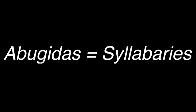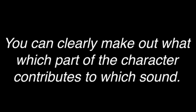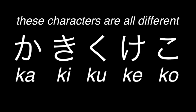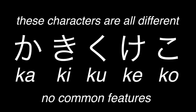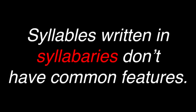So why is classifying abugidas and syllabaries as the same thing wrong? Take the Hindi characters 'ka', 'ku', and 'ke' — you can clearly make out the 'k' glyph and the added strokes representing vowel sounds. In an abugida, you can see what each part of the symbol contributes to the sound. But looking at the 'k' row in Japanese hiragana, nothing hints that these characters are related, and nothing indicates the consonant or vowel sound. In a syllabary, you can't identify individual sound components the way you can in an abugida.